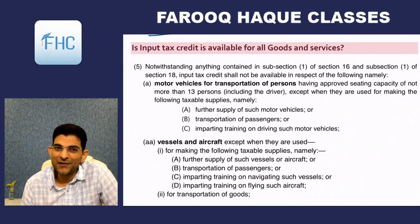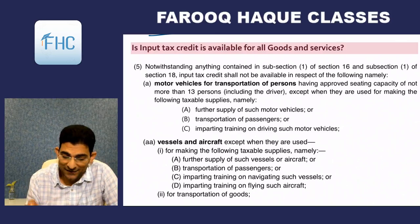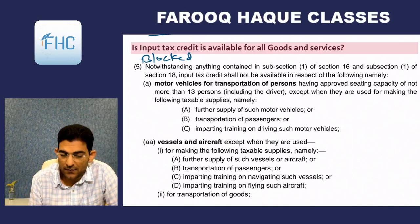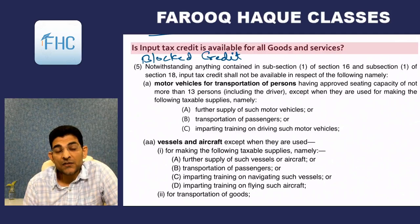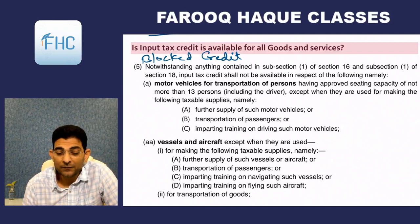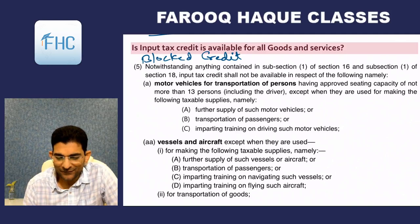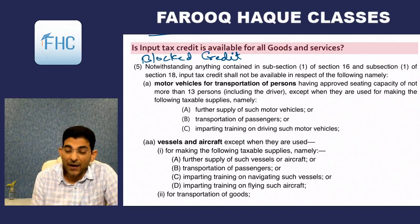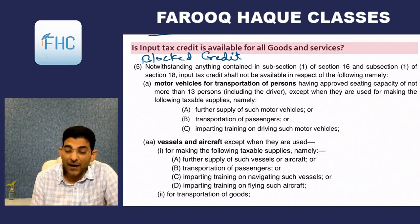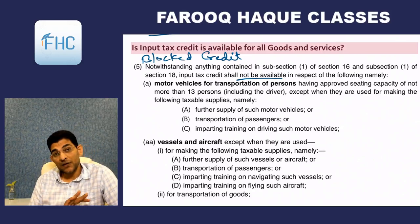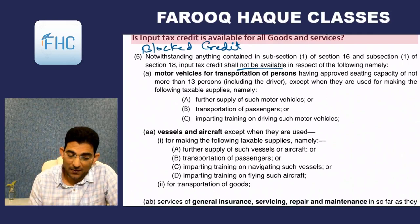Now comes subsection 5 — the most interesting one — called blocked credit. These are certain goods and services on which credit is not allowed altogether. Notwithstanding anything contained in Section 16 subsection 1 — which allows credit — Section 17(5) overrides Section 16 and Section 18 as well. Input tax credit shall not be available in respect of the following.